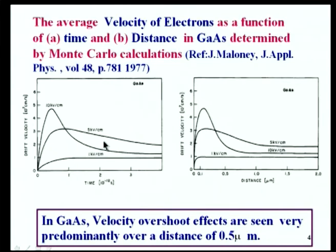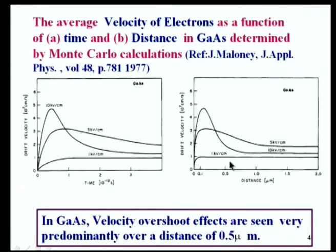The velocity is high at that field because the electrons are in the low mass region. Once they acquire energy, they go into the region where mass is high, and velocity saturates. If you convert to distance, the drift velocity versus distance along the channel from the source shows that for short channel lengths, over the entire region the velocity will be higher than the saturation velocity. This gives higher current driving capability and higher transconductance for a given device.